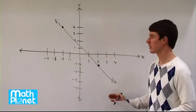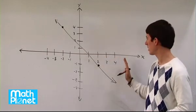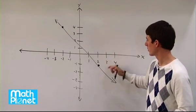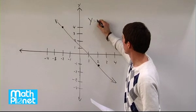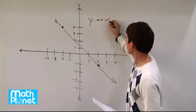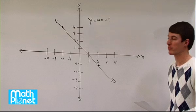Here we have a line on the coordinate plane with x and y axes, so we just need to find the equation of this line. We always write y equals mx plus c in the slope-intercept form.